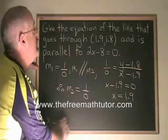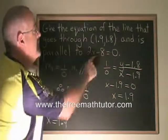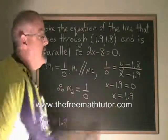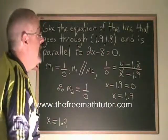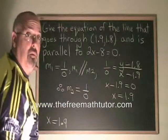The equation of the line that goes through 1.9, 1.8 and is parallel to this line is x equals 1.9. And I have found a way to justify it and show my work.